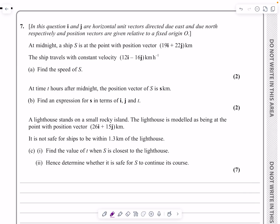Okay, this is the M1 paper from January 2024, question number seven. This is a vectors question, in particular, vector equation of a line. One of these questions where we have a ship moving around. This one starts off with position vector 19i plus 22j and it's traveling with a velocity of 12i minus 16j.